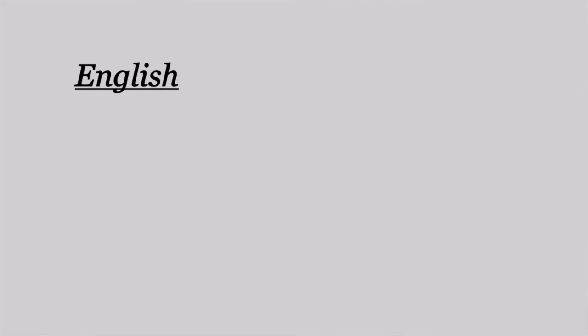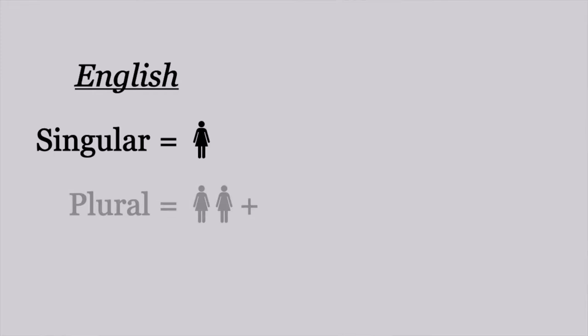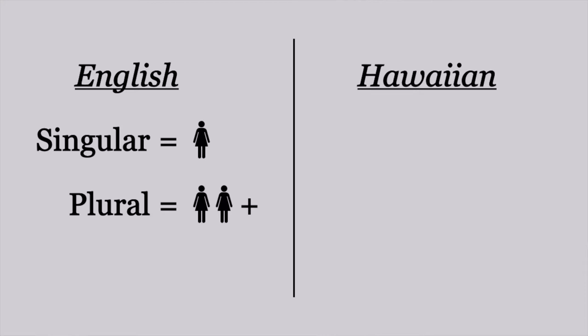Before we learn the Hawaiian words for those, I need to talk about two big differences between the Hawaiian language and English. First, there is a difference in the pronouns depending on whether you're talking about just two people or three or more people. For example, 'they' when referring to Mary and Bob uses a different Hawaiian word than 'they' when referring to Mary, Bob, and John. While English has two categories — singular and plural — Hawaiian has three: singular for one person, dual for two people, and plural for three or more people.